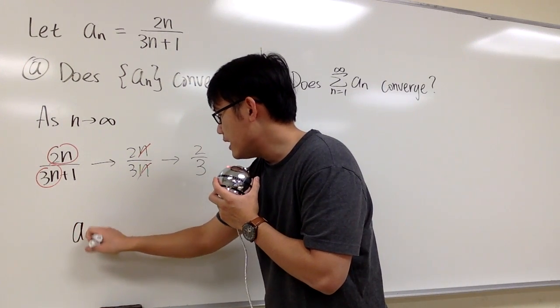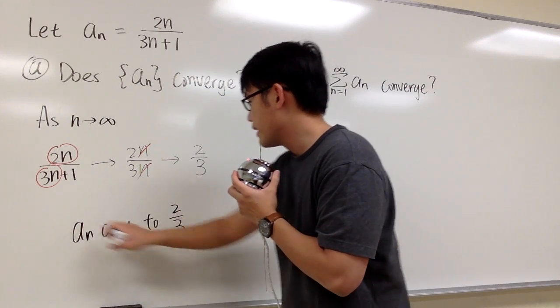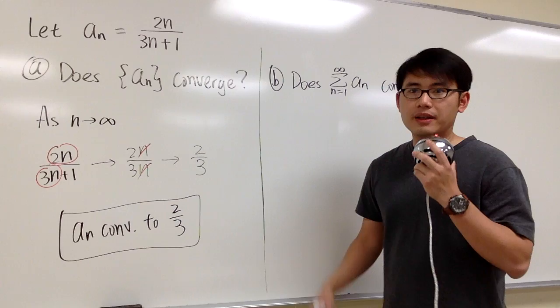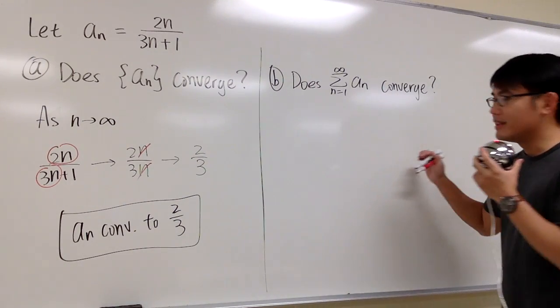the sequence converges to 2 over 3. So we can say a_n converges to 2 over 3. And this right here will be the response for that part. Does the sequence converge? All we need to do is just take the limit. Let's look at this one.